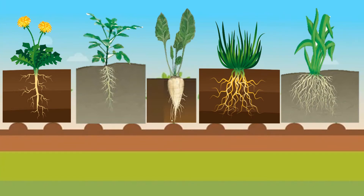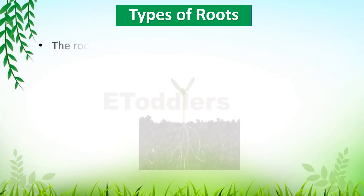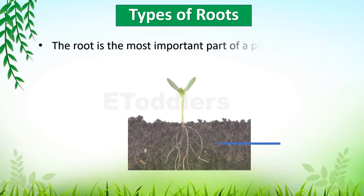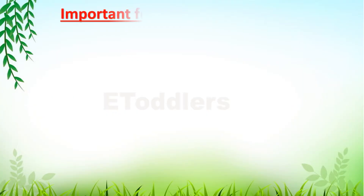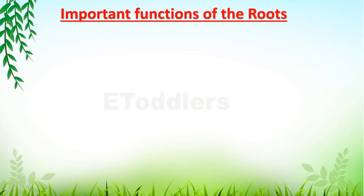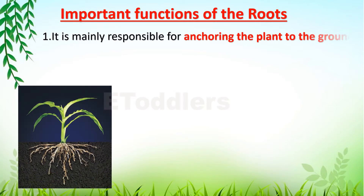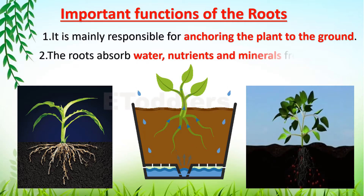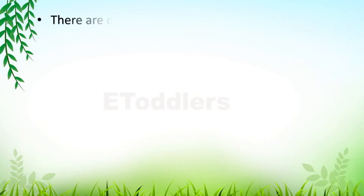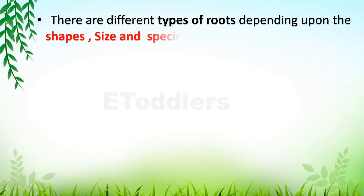Let's learn about types of roots in plants. The root is the most important part of a plant that grows down to the soil and water. Let's learn about important functions of the roots. It is mainly responsible for anchoring the plant to the ground. The roots absorb water, nutrients and minerals from the soil. There are different types of roots depending upon the shapes, size and species of the plants.